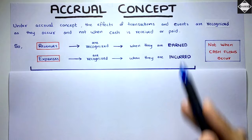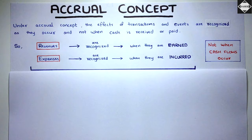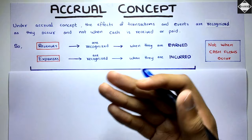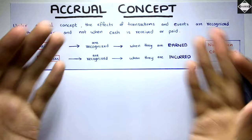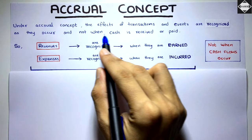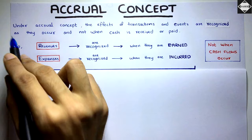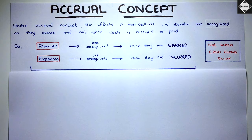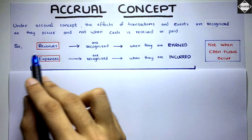Welcome back. Today we are going to understand what the accrual concept is in accounting and the logic behind it. It's really simple — whatever has happened in your business, whatever has taken place, just record that in the accounting books. You will not see whether the cash flow behind the transaction has happened or not. You will just see whether the transaction has taken place. The effects of transactions and events are recognized as they occur, not when cash is received or paid.